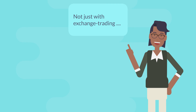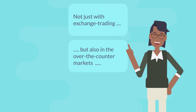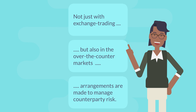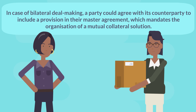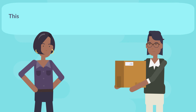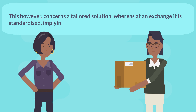Not just with exchange trading, but also in the over-the-counter markets, arrangements are made to manage counterparty risk. In case of bilateral deal-making, a party could agree with its counterparty to include a provision in their master agreement which mandates the organisation of a mutual collateral solution. This, however, concerns a tailored solution, whereas at an exchange it is standardised, implying the same rules for each and every member.